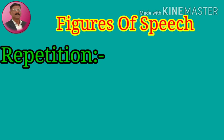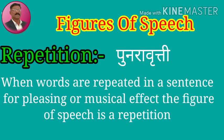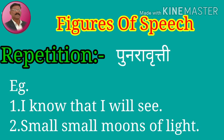Second one is repetition, means punnarukti. When words are repeated in a sentence for a pleasing or musical effect, the figure of speech is repetition. For example, 'I know that I will see' — here 'I' is repeated. Second sentence: 'Small, small, small, small moons of light' — here the word 'small' is repeated for a pleasing effect.